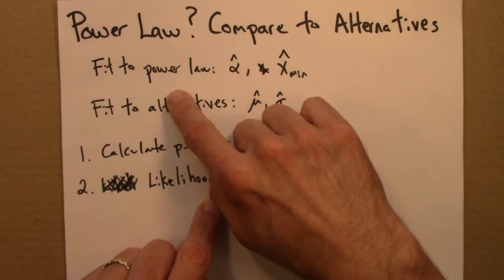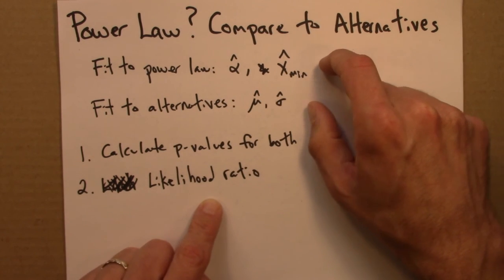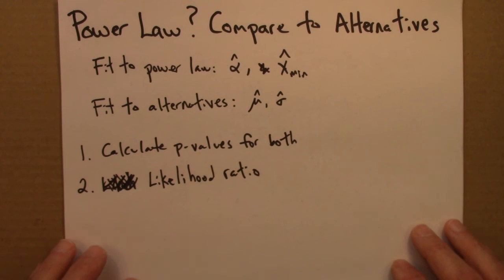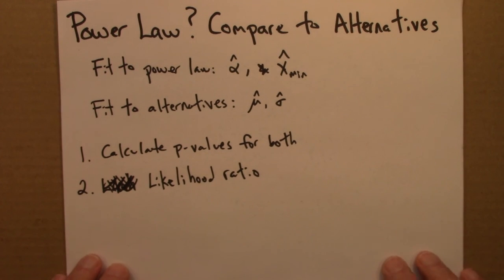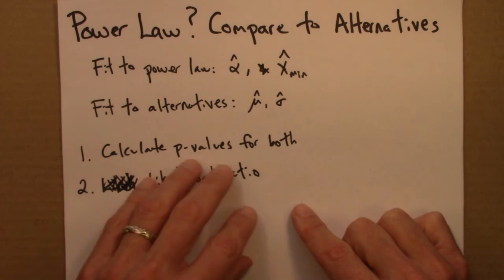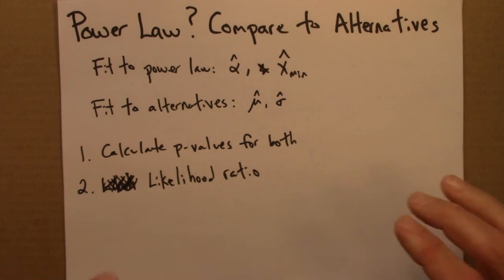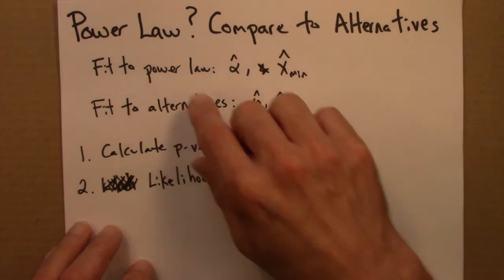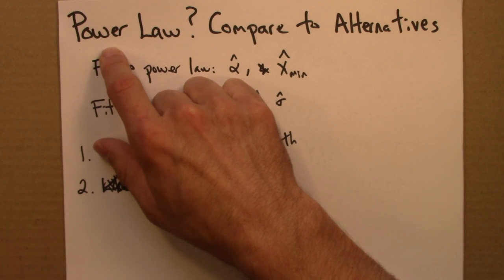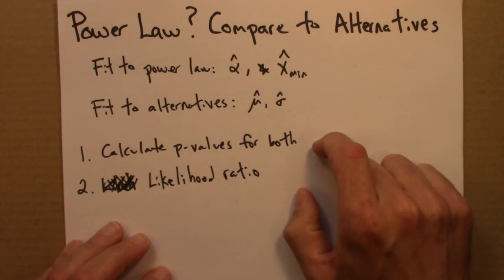So there's a lot of technical details in there, and the Clauset Newman-Shalizi paper is as clear a description of that approach as I've seen, and it's well referenced. So if you want to dig into this literature, that would definitely be the place to start. The main point here is that when you're fitting for power laws, it's almost always a good idea to compare to different alternatives, and here are some approaches that will let you do that.